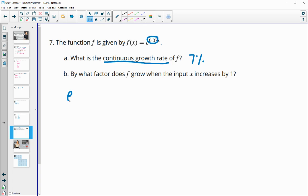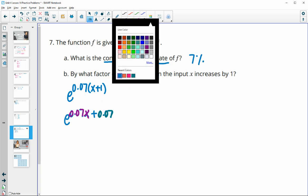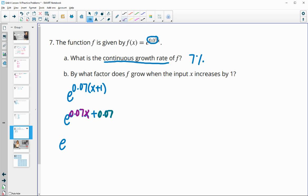And then what factor does f grow when the input x increases by 1? So e to the 0.07 times x plus 1 because we're going to increase x by 1. I'm going to distribute this 0.07 to the x and the 1. When we add exponents, that means we multiplied the same base. So we have e to the 0.07x multiplied by e to the 0.07.